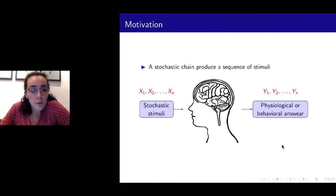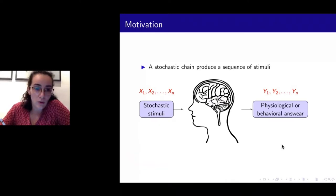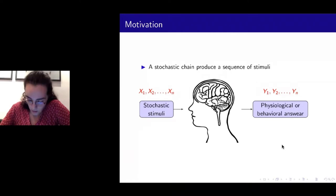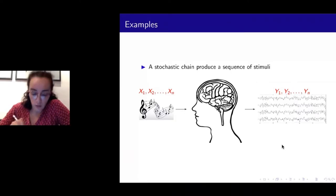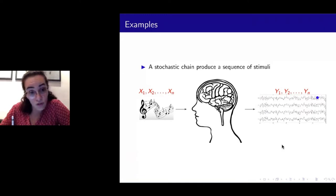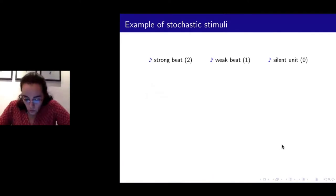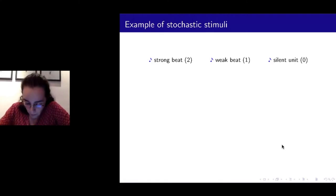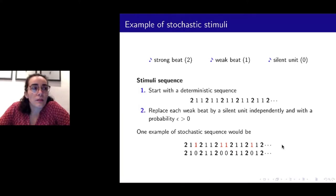The motivation is this experimental protocol that Claudia told you before. We have some stochastic stimuli and we expose some volunteers to this stochastic stimuli while we record some behavioral or physiological answer. In my case today, I will speak about physiological answers — in particular, the case when we have auditory stimuli and the physiological answer we are recording is electroencephalographic data, which basically records electrical activity from the brain.